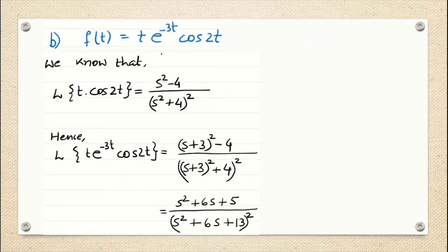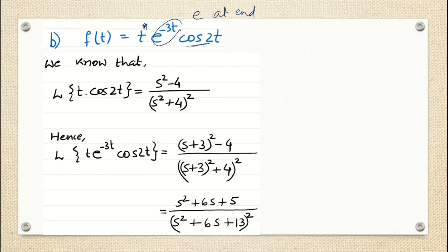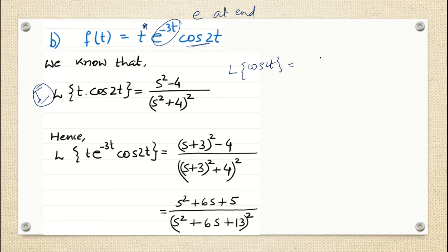Similarly, looking at the second question — exactly the same approach. If you see that t is present (t can be t^n, or t to the power 1, 2, 3, 4 — anything), you differentiate that many number of times. Here it is t to the power 1. So with t·e^(-3t)·cos 2t present, think 'e at end' — keep e^(-3t) aside and your function is t·cos 2t. First, find the Laplace transform of cos 2t: it is s/(s²+ω²) with ω=2, so s/(s²+4).